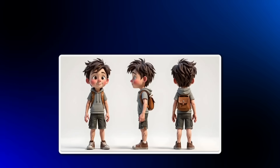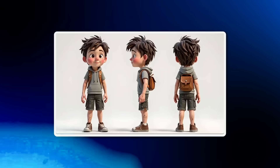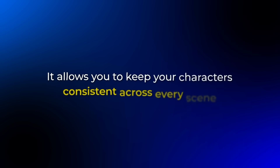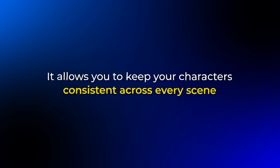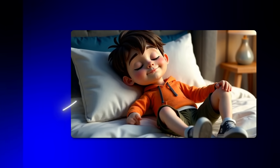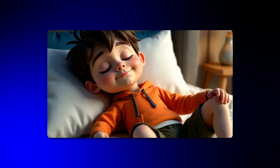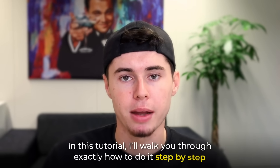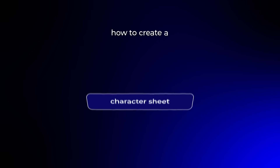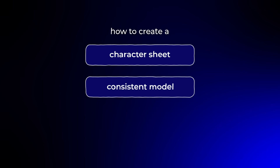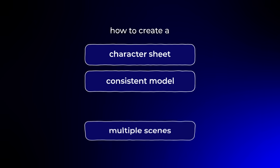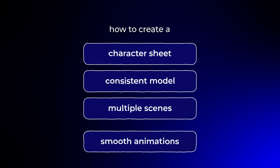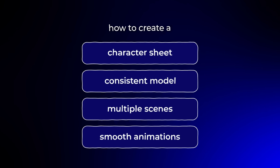But I've been playing around with this new AI tool and it makes the process so much easier. It allows you to keep your characters consistent across every scene and even turn those images into fully animated videos. In this tutorial, I'll walk you through exactly how to do it step by step. By the end, you'll know how to create a character sheet, train a consistent model, generate multiple scenes and bring everything to life with smooth animations. Let's dive in.